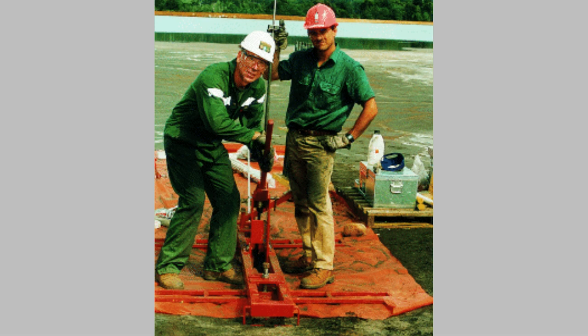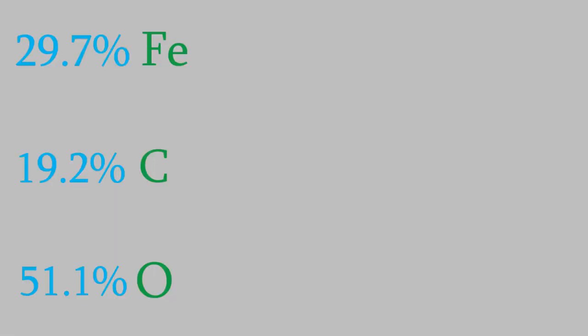So let's get back to our experiment where we're testing water that we think might be polluted. The data we get might look like this. A compound we discovered contains 29.7% iron, 19.2% carbon, and 51.1% oxygen. We'd like to know what this compound is, but we can't tell just by looking at these percentages. Not yet, anyway. But with a little effort, we can figure out the empirical formula. That's why the empirical formula can be very useful.